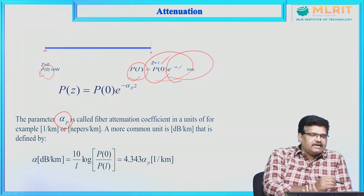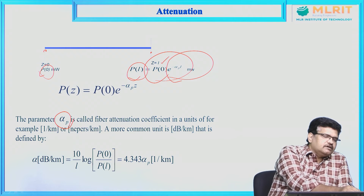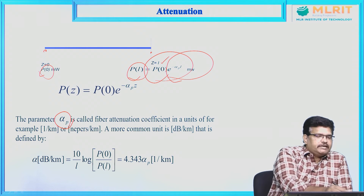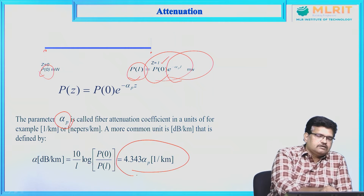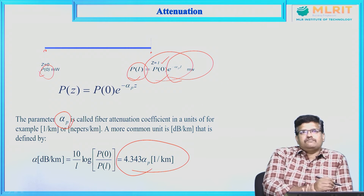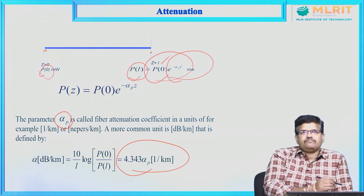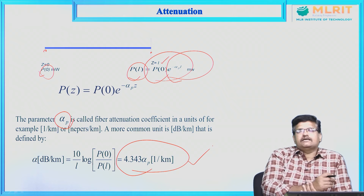The attenuation may be calculated as: alpha(dB/km) = (10/L) × log(P₀/PL), which is approximately equal to 4.343 × αP. This is the attenuation calculation.